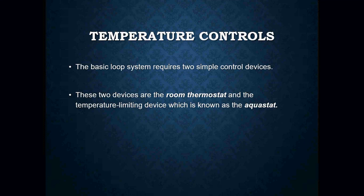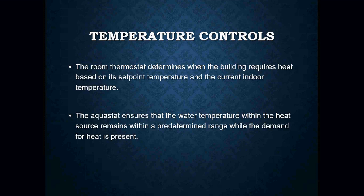The aquastat also tells the burner to shut off when the boiler water reaches a set temperature — say 150 or 160 degrees. Without those two devices, you're going to have a boiler that runs rampant and never shuts off. The room thermostat determines when the building requires heating based on the set point — say 72 degrees. When the room drops below 72, the thermostat closes and sends the signal to the aquastat, which ensures the water temperature within the heat source remains within a predetermined range while the demand for heat is present.